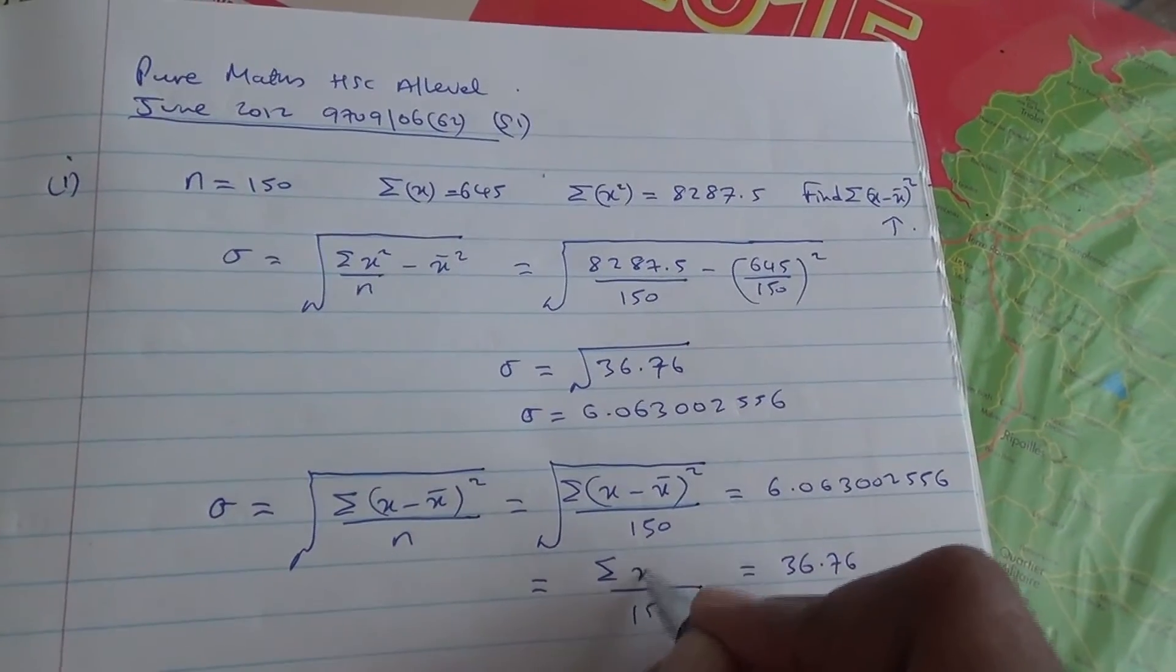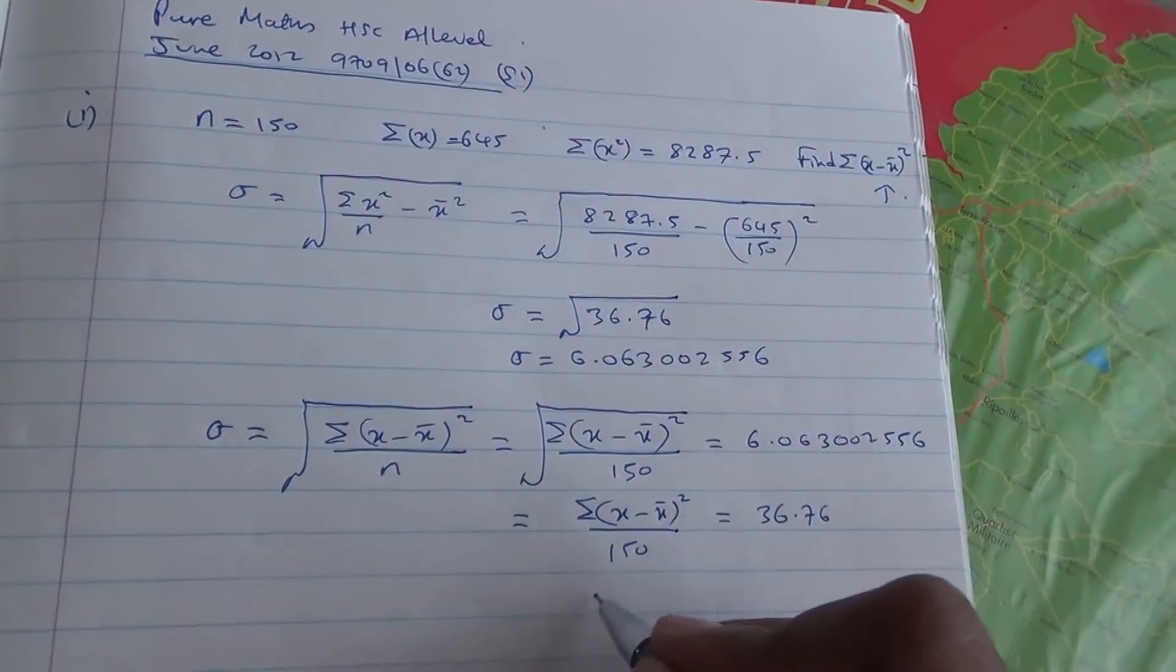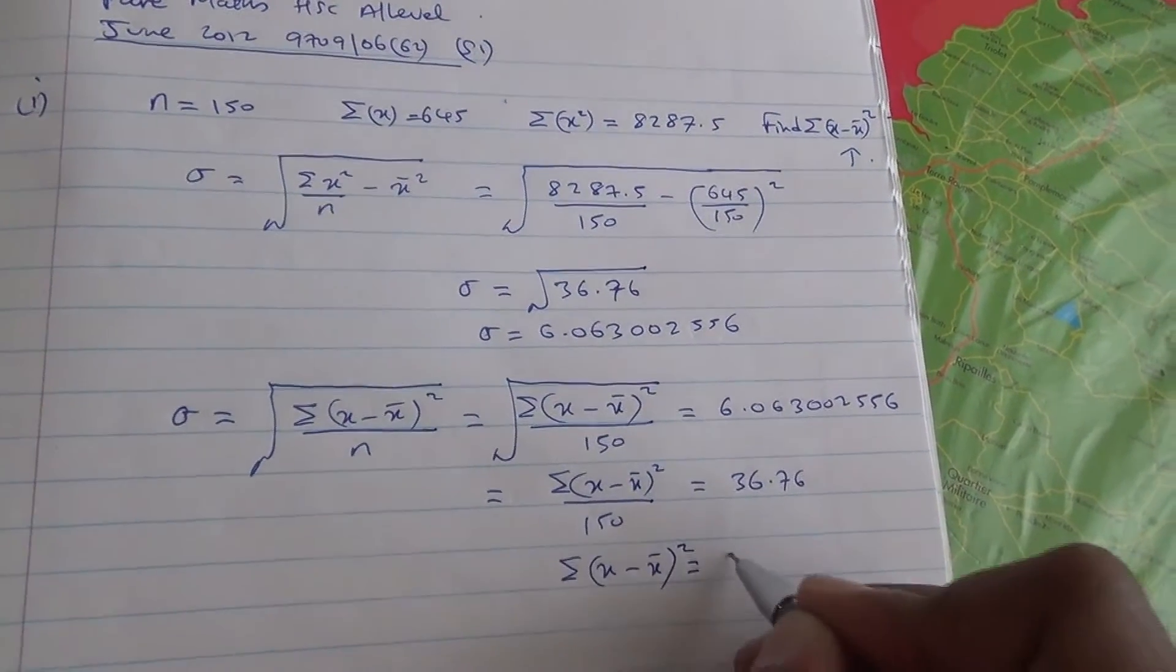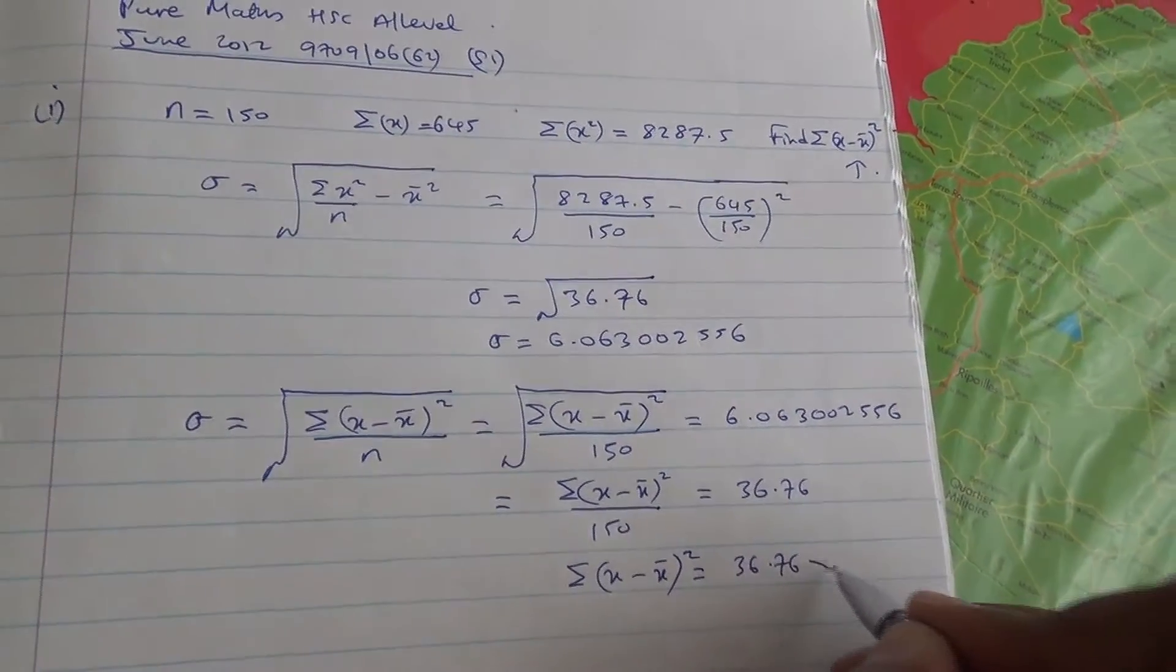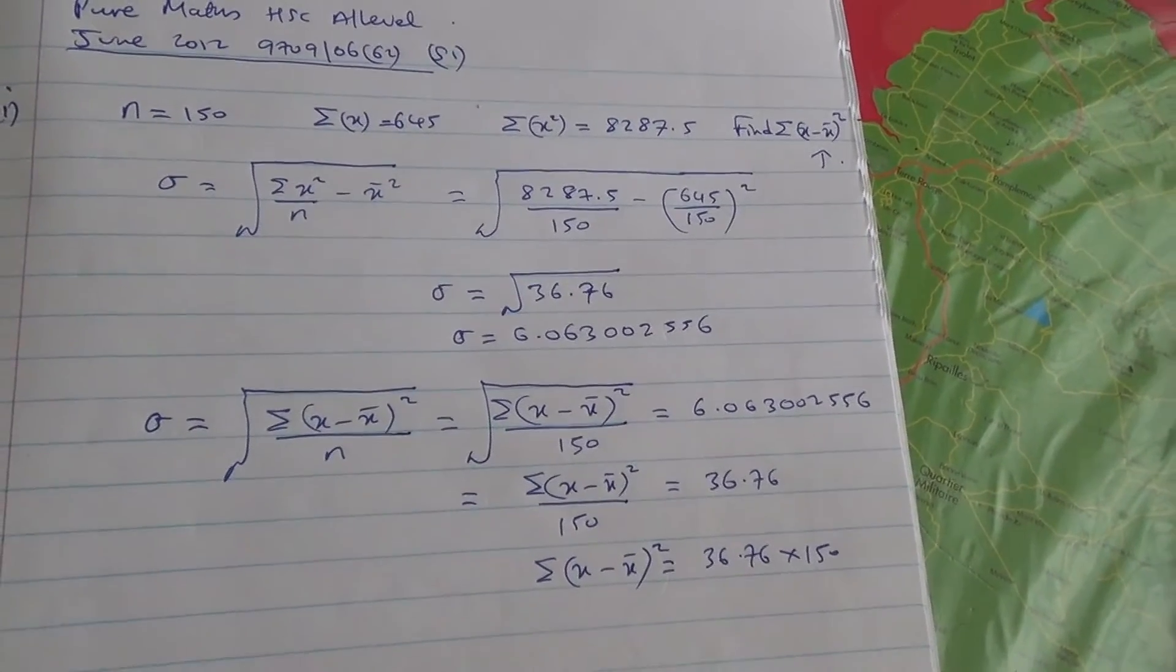and here you have summation of x minus the mean of x, all of that squared. OK, so summation of x minus the mean of x to the square is equal to 36.76, times 150, and if you do it on your calculator,